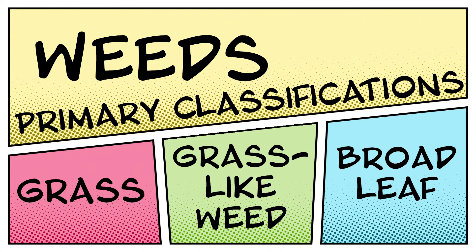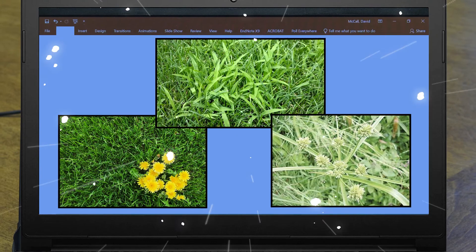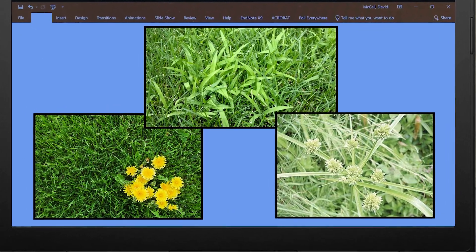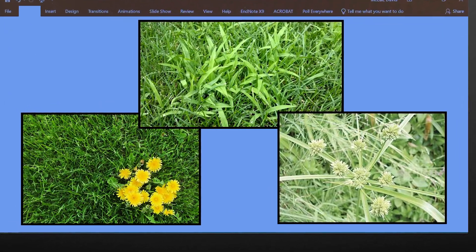Is it a grass weed, like crabgrass or annual bluegrass? Is it a grass-like weed, something like sedges or rushes? Or is it a broadleaf — dandelion, white clover, black medic? Those would be examples. And here are some examples of each of those categories.